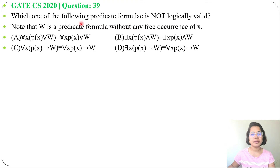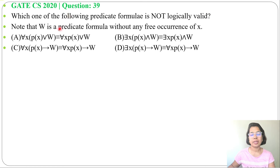Let's solve one previous question of mathematical logic. This question was asked in GATE CS 2020, question number 39. Which one of the following predicate formulas is not logically valid? Note that W is a predicate formula without free occurrence of X, and four options are given.